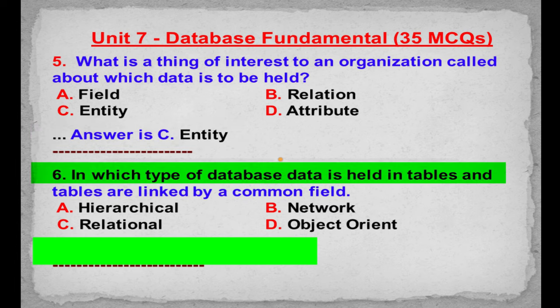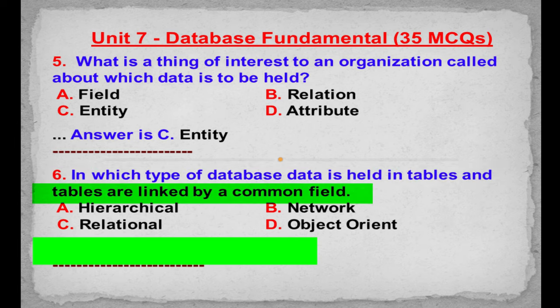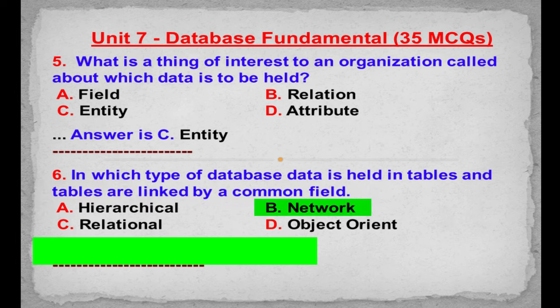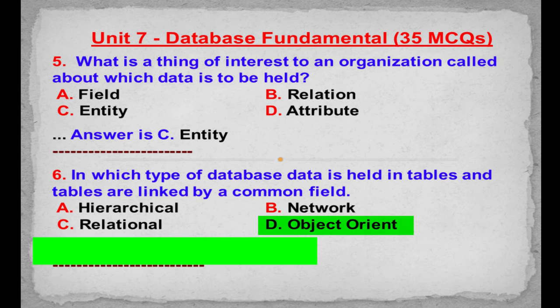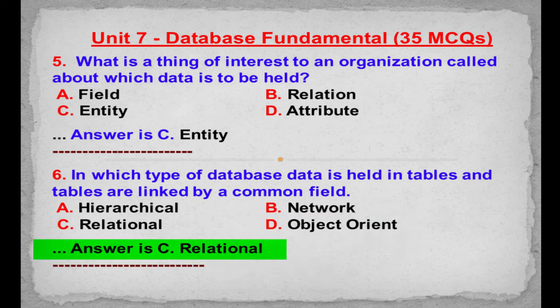MCQ number 6: In which type of database is data held in tables, and tables are linked by a common field? Option A: Hierarchical. Option B: Network. Option C: Relational. Option D: Object Oriented. Correct answer is Option C: Relational.